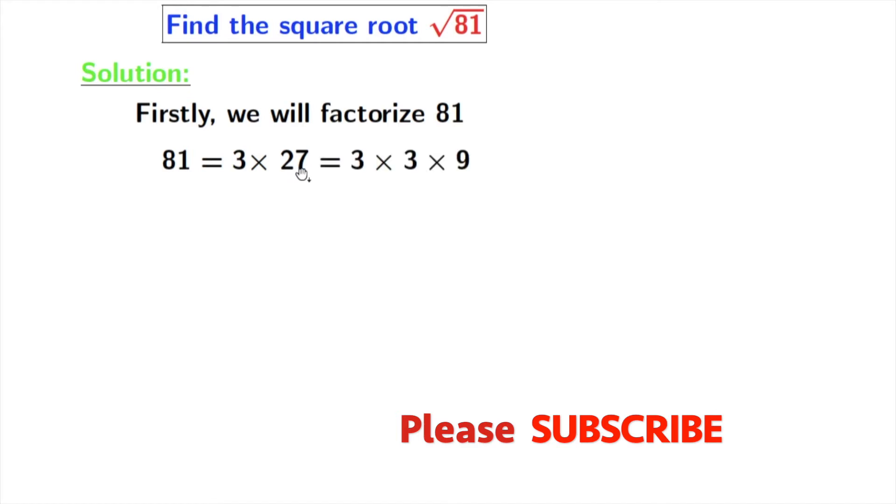And we all know that 9 is equal to 3 times 3. So we have finally 81 is equal to 3 times 3 times 3 times 3.